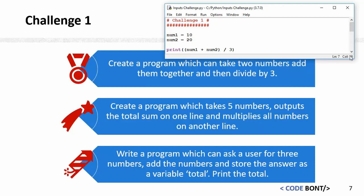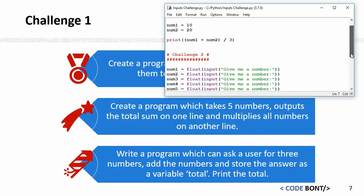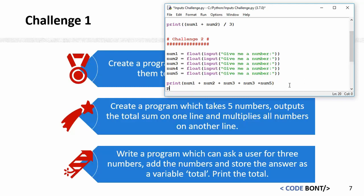The second one: create a program that takes five numbers, outputs the total sum on one line, and multiplies all of the numbers on another line. I've done the first part there. I've just noticed I haven't done the multiplication, so let me do print num1 multiplied by num2 multiplied by num3 multiplied by num4 multiplied by num5.